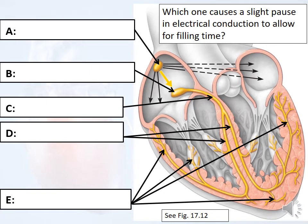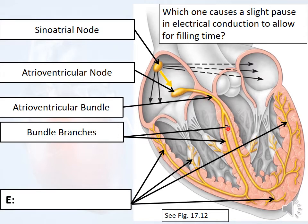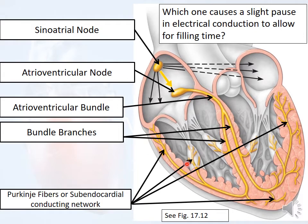So you can fill this in: number one is the SA node — the sinoatrial node — that fires and sends the signal to both atria, contracting the right and left atrium. Next is the AV node, which receives the signal and fires it down to the AV bundle in that superior part of the septum. Then it splits into the bundle branches — one on the right, one on the left — and immediately into the Purkinje fibers, also known as the subendocardial conducting network. The signal travels really fast, wraps around the heart, and contracts all that muscle so the ventricles contract all together.